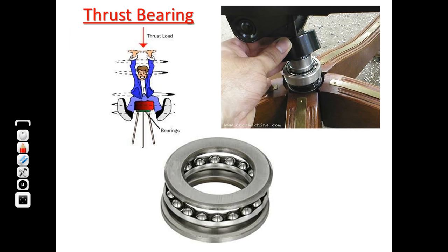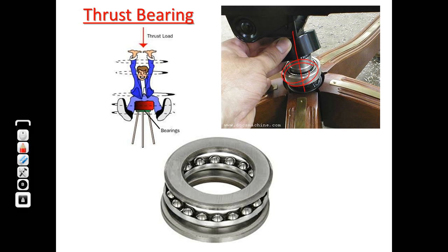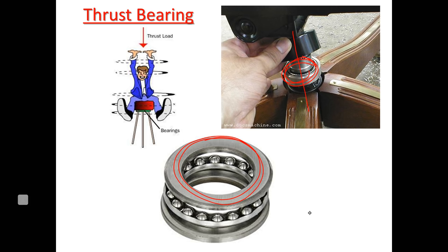Thrust bearing is specifically for pure axial or pure thrust load. A day-to-day life example is a chair — the load is completely purely thrust. The bearing used here is a thrust bearing. For a vertical shaft with a bearing mounted on it, like in a chair, we may use a thrust ball bearing since the load carrying capacity needed is low. Similarly, we may have taper roller thrust bearing or cylindrical rolling element used as a thrust bearing.